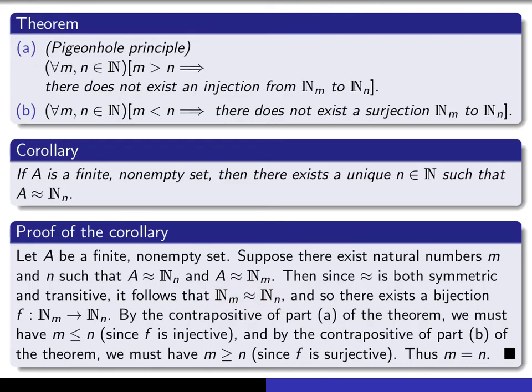So that means that there would be a bijection from N sub m to N sub n. Now if you look at part (a), and you just take the contrapositive of that, the contrapositive says for all m and n, if there exists an injection from N sub m to N sub n, then m must be less than or equal to n.